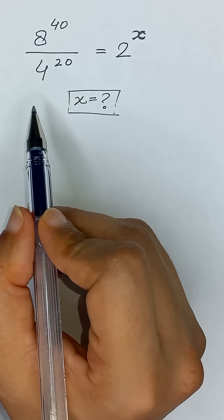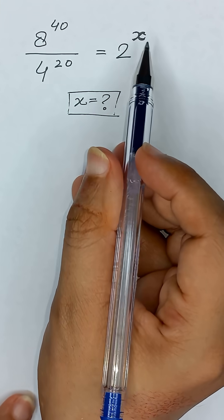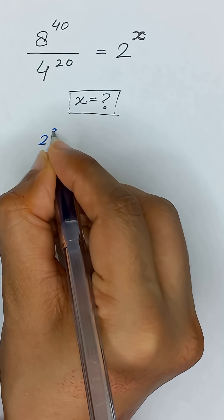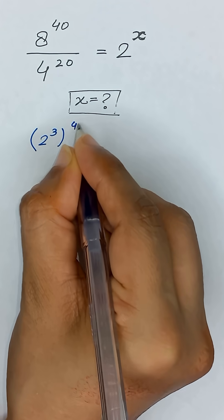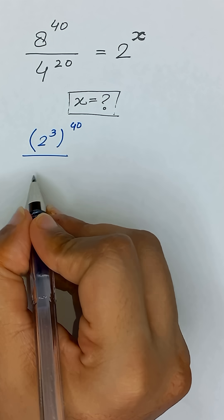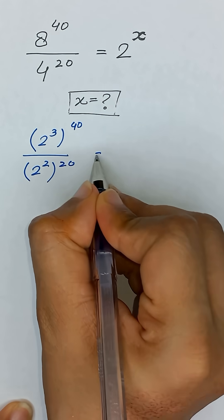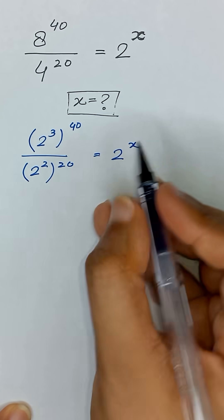8 to the power 40 divided by 4 to the power 20 is equal to 2 to the power x. So 8 is the same as 2 to the power 3 and it's power 40, divided by 4 which is the same as 2 to the power 2 and it's power 20, is equal to 2 to the power x.